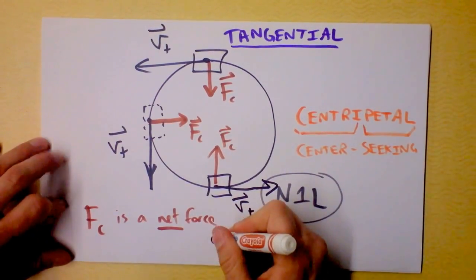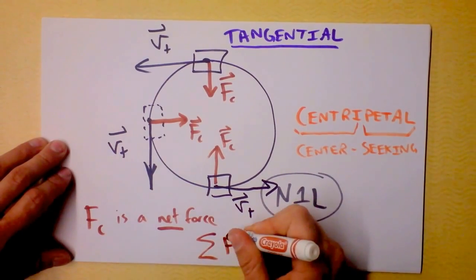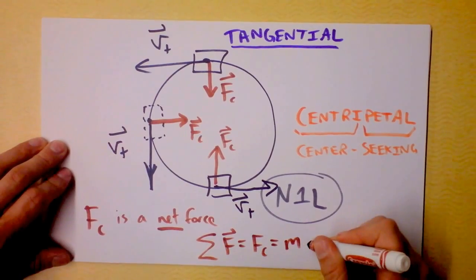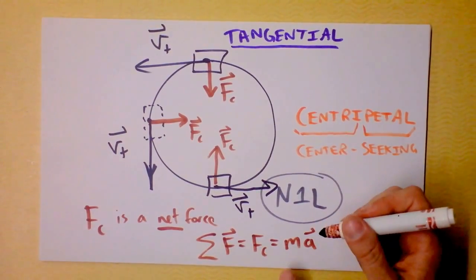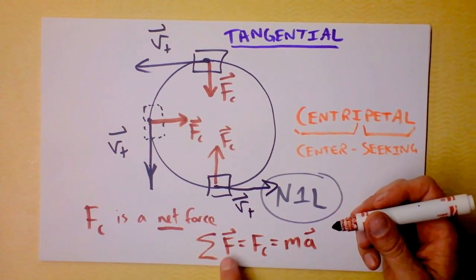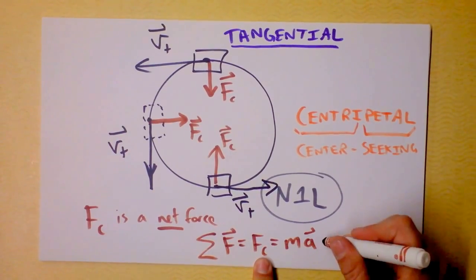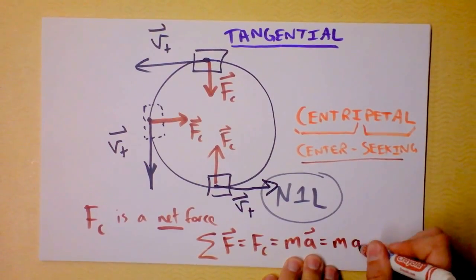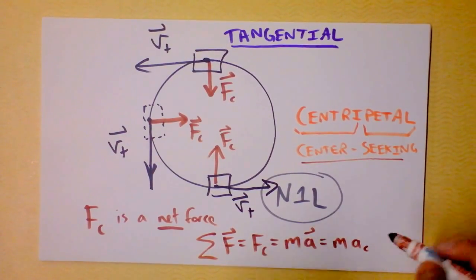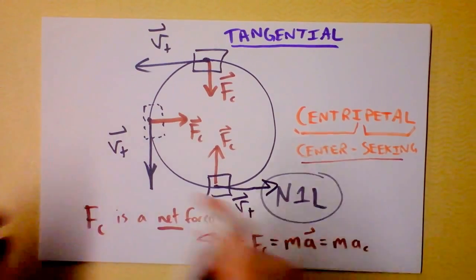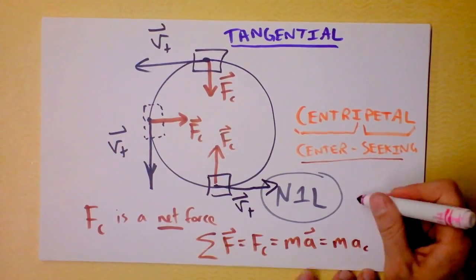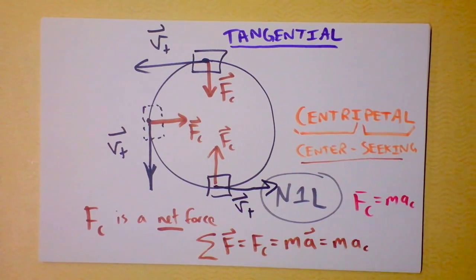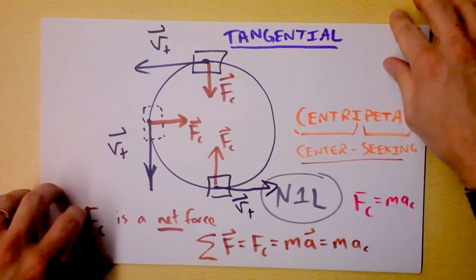So centripetal force is a net force, which means if the net force is a centripetal force, then that's going to be mass times the acceleration. But guess what? If the acceleration is in the direction of the net force, which is in the direction of the centripetal force, centripetal means towards the center, so the acceleration will also be towards the center. So let's take this equation that we just figured out over here. I'm going to say centripetal force is mass times centripetal acceleration.